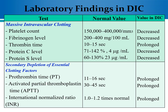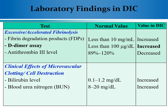These are the lab investigations to confirm the diagnosis of DIC. You have to remember all these lab investigations, their normal values, and the kind of changes or abnormalities in patients with DIC. The D-dimer assay will be increased, FDP will be increased. Also, microvascular clotting may affect the liver, and you will find higher serum bilirubin level, and may affect the kidney, resulting in higher blood urea nitrogen level.